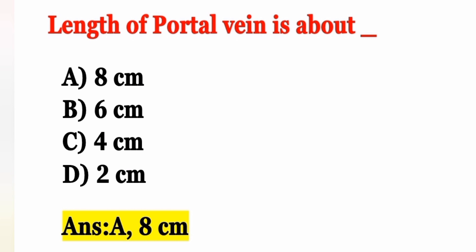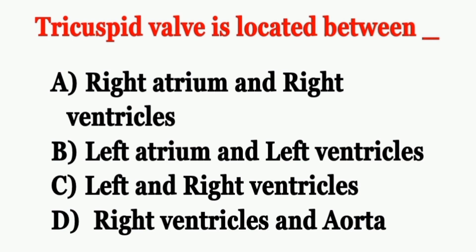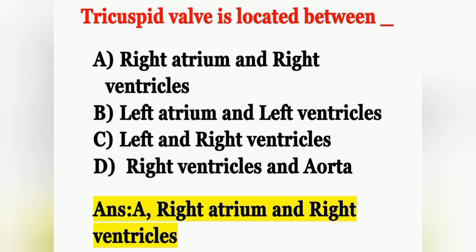Next question: The tricuspid valve is located between — Option A: right atrium and right ventricles, Option B: left atrium and left ventricles, Option C: left and right ventricles, Option D: right ventricles and aorta. The tricuspid valve, also called the right atrioventricular valve, is located between the right atrium and right ventricles. It prevents backflow of blood into the right atrium. Option A is the correct answer.